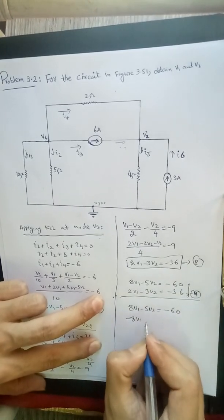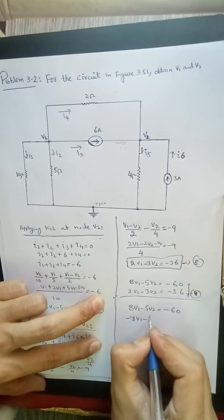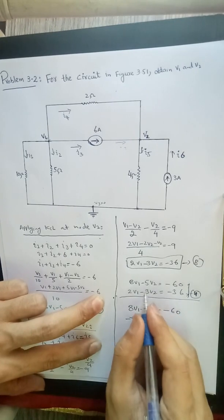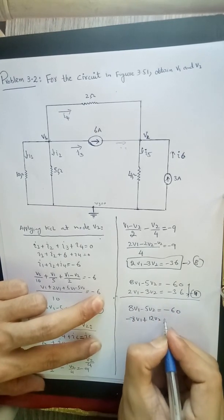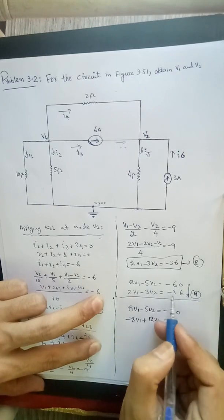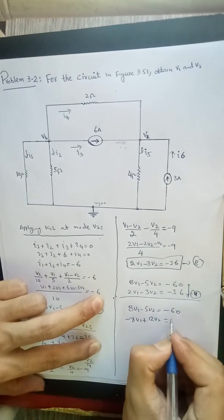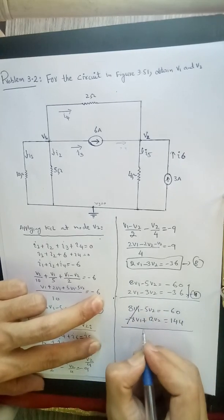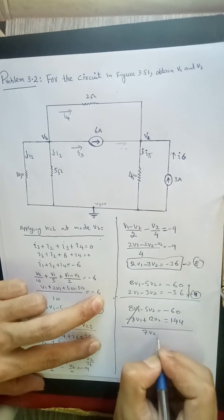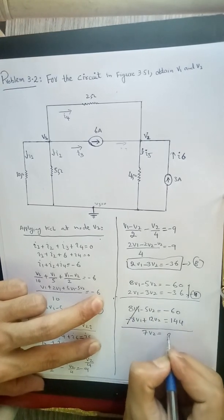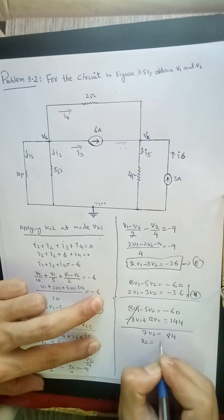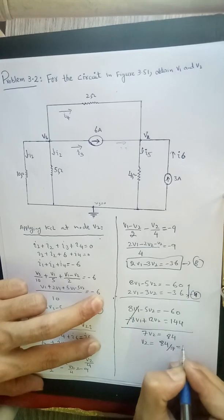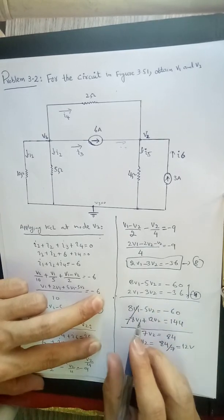8V1 minus 5V2 equal to minus 60 and minus 4 multiplied, so minus 8V1 plus 12V2. Minus 4 times minus 36 would be 144. So you can cross this one and you can simply get 7V2 equal to 84, or we can say 84 divided by 7 is 12V. So V2 is 12V.